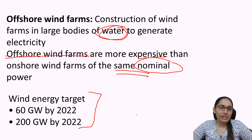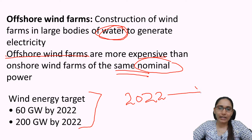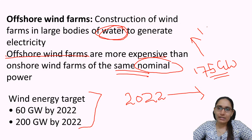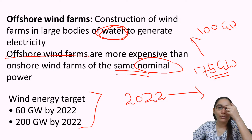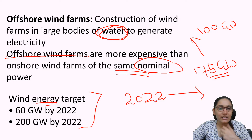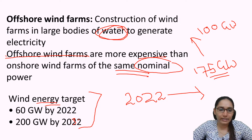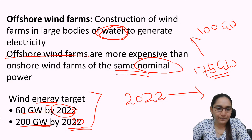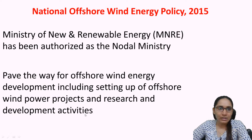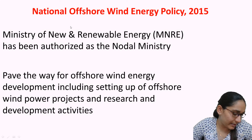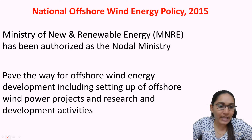The wind energy targets: 60 gigawatts by 2022 and 200 gigawatts by 2030. The National Offshore Wind Energy Policy of 2015 — the Ministry of New and Renewable Energy is the nodal agency for its implementation. It paves the way for offshore wind energy development, including setting up of offshore wind power projects and research and developmental activities.